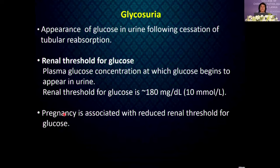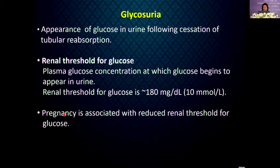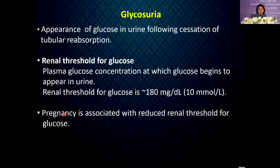Glycosuria is the appearance of glucose in the urine following cessation of tubular reabsorption. The renal threshold for glucose is the plasma glucose concentration at which glucose begins to appear in the urine — normally 180 mg/dL or 10 mmol/L. Pregnancy is associated with a reduced renal threshold for glucose.